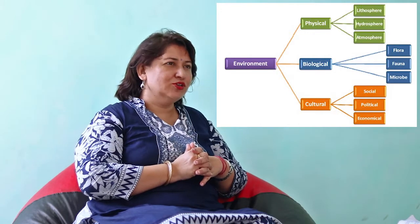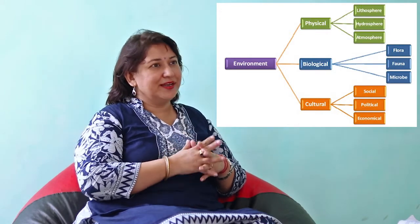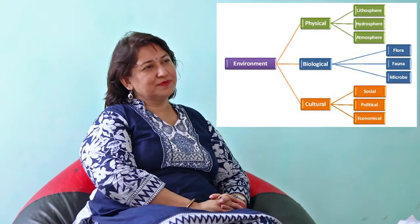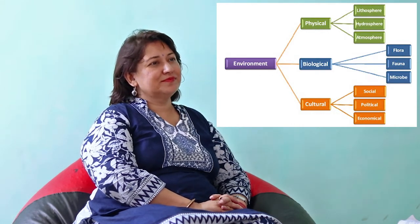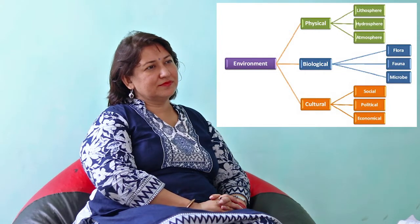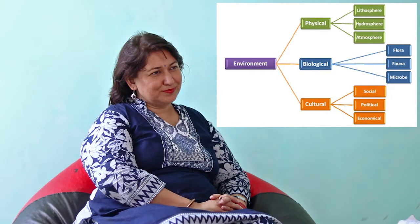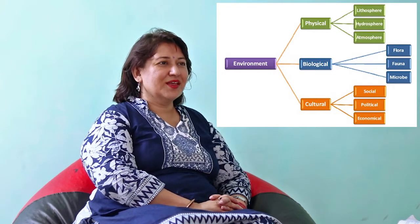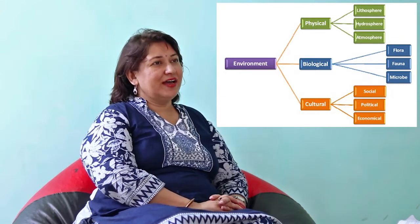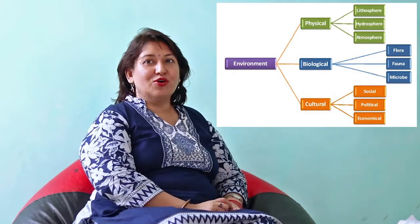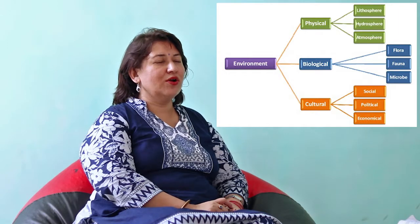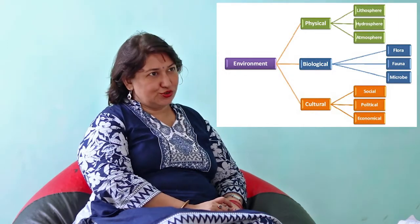If you talk about the types of environments, they can be divided into three types. One category can be where people and living things live, one can consist of culture and religious activities. So basically we can divide our environment into three different types: the physical environment, the biotic environment, and the third we can call the cultural environment.